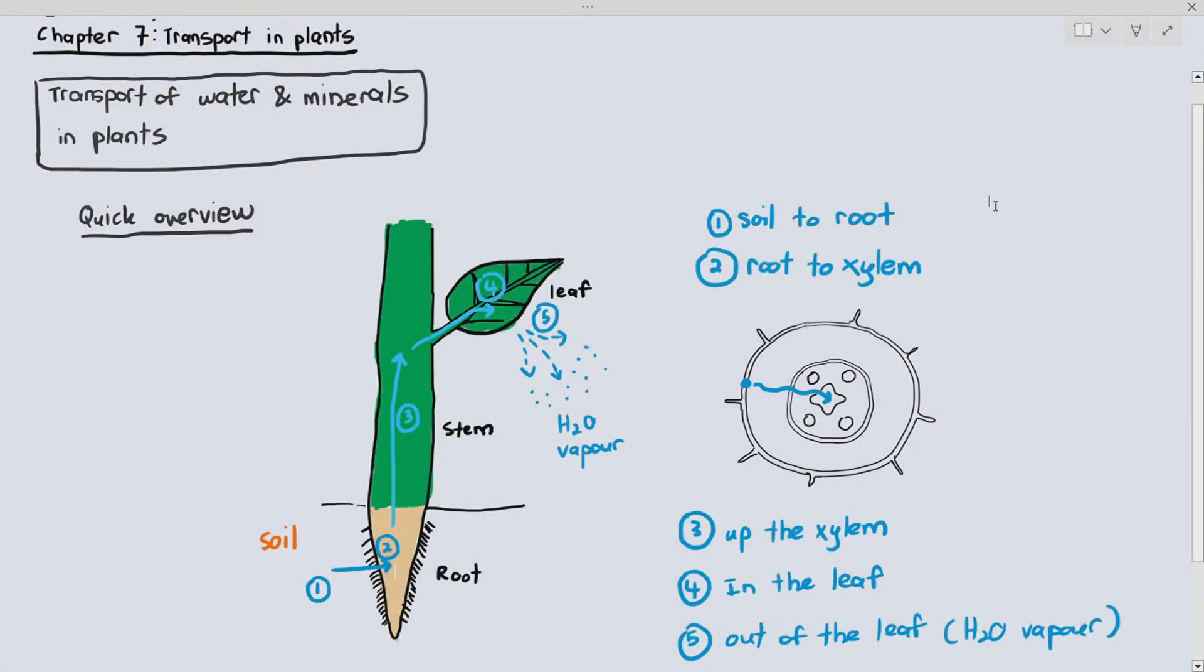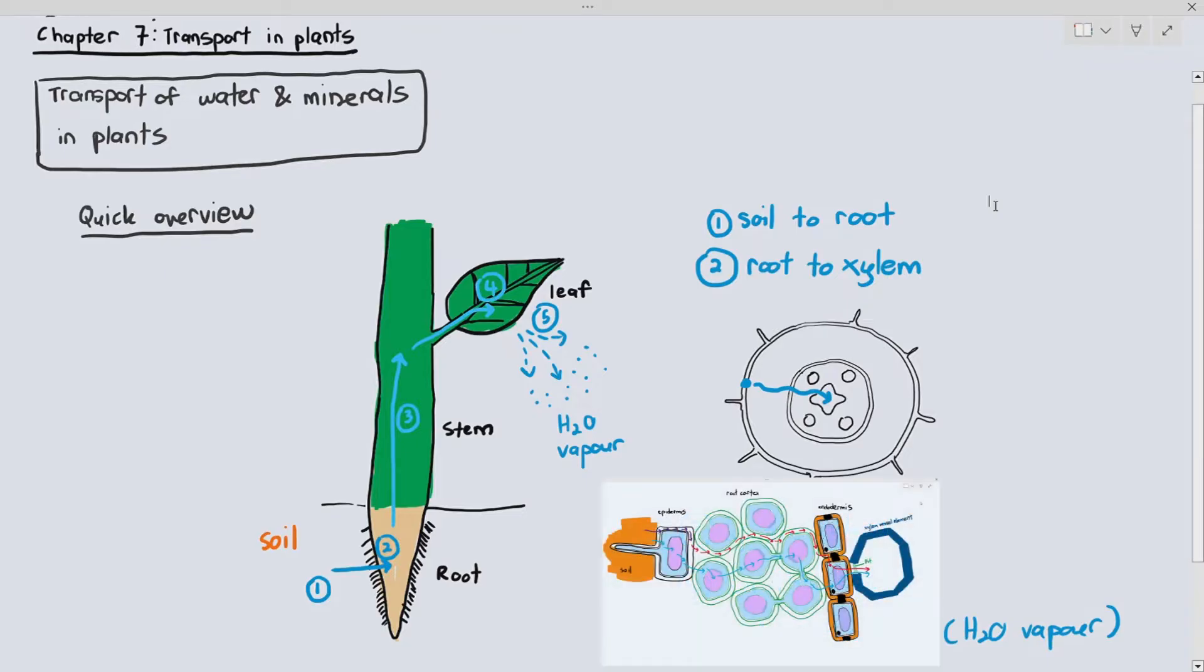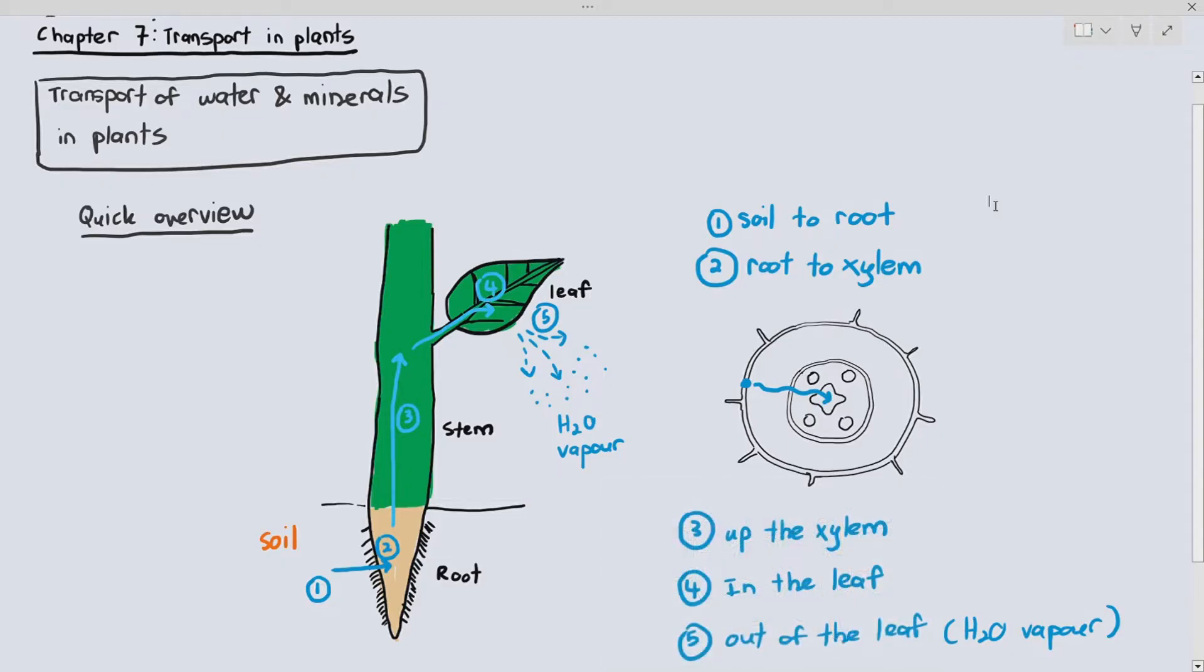In the previous video, we had seen the movement of water and minerals through the soil into the root, and then from the root into the xylem. Logically speaking, the next part is the movement of water and minerals up the xylem.